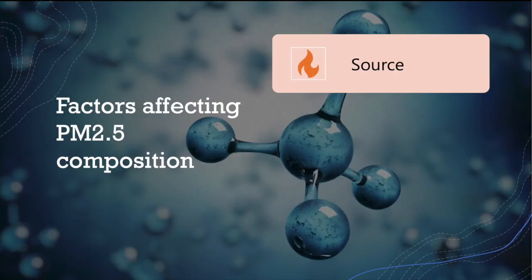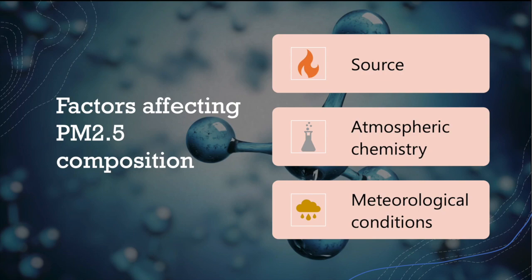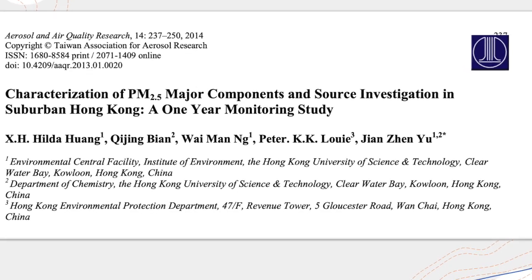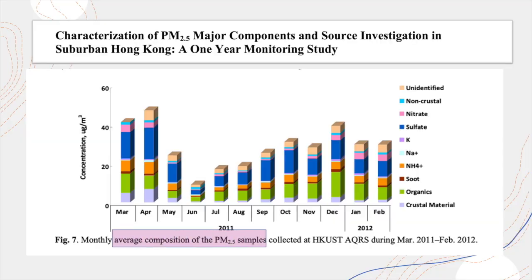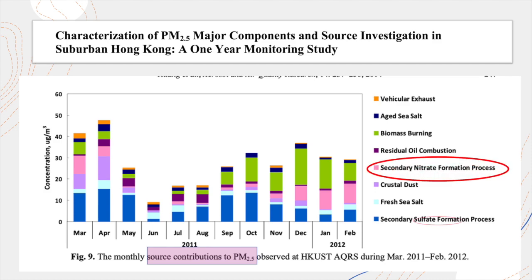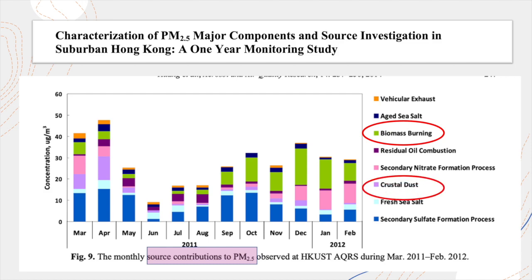Depending on the source, atmospheric chemistry, and meteorological conditions, the composition of PM 2.5 can vary widely. What's really interesting is that if you analyze the chemical composition of PM 2.5, you can actually get a good picture of where those particles came from — it's a bit like forensic evidence at a crime scene. One study from Hong Kong found that sulfate and organic carbon made up a large proportion of the PM 2.5 mass, and from that they estimated the source. A big portion came from secondary formation processes — sulfates and nitrates reacting in the air — but also substantial contributions from biomass burning and crustal dust, which is just a fancy word for dirt.